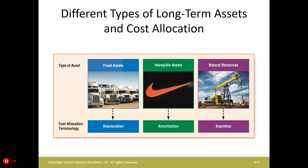For fixed or tangible assets, we allocate them using a term called depreciation. For intangible assets, we allocate based on a term called amortization. And for natural resources, we use a term called depletion. We're going to focus on depreciation.